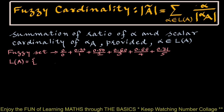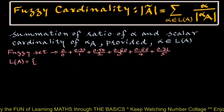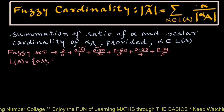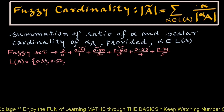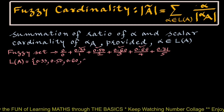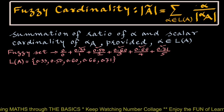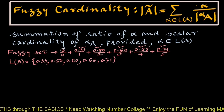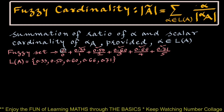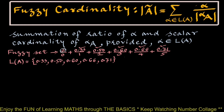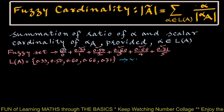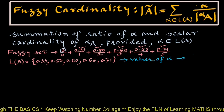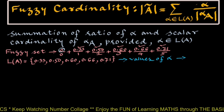The level set L will be the set of all positive membership grade values: 0.33, 0.50, 0.60, 0.66, and 0.71. According to the definition of level set, we have excluded membership grade 0. Members of the level set are the values of alpha that we will consider in decreasing order for finding alpha cut A.